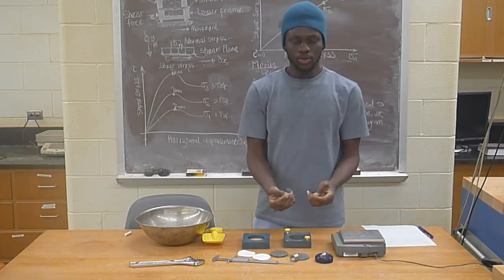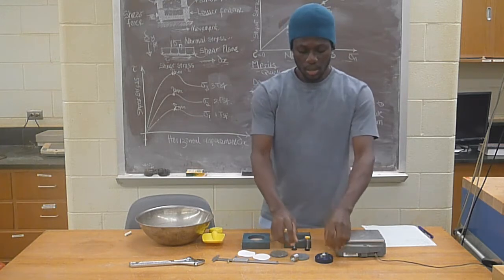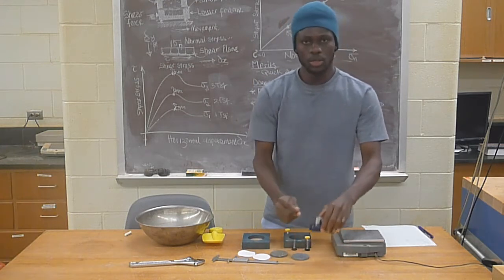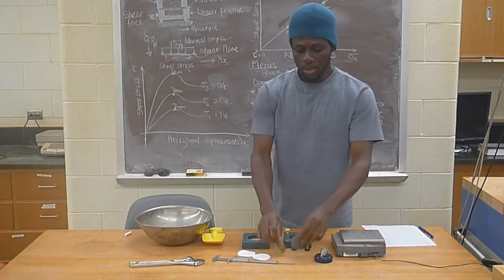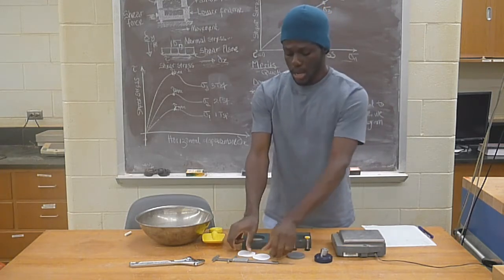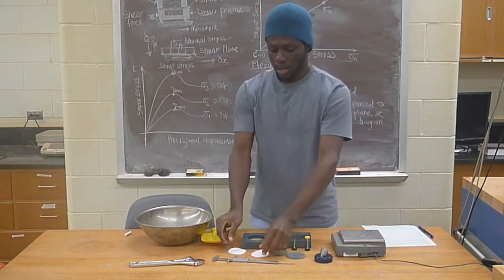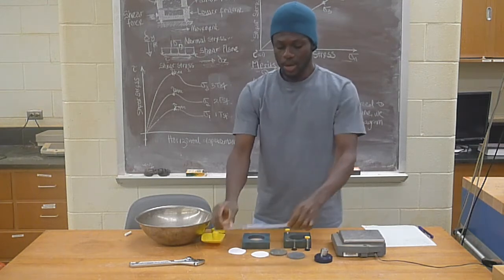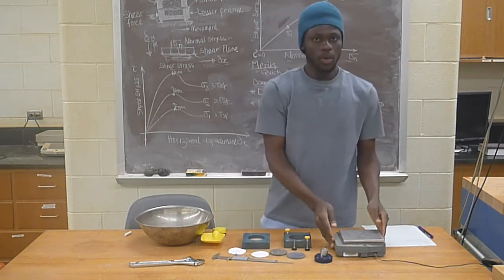We will be needing two black screws to lock the shear box in place. This is the top platen, it goes on top of the shear box. We will also be needing a pair of porous stones and a pair of filter papers. We will also be needing a vernier caliper and a weighing balance.